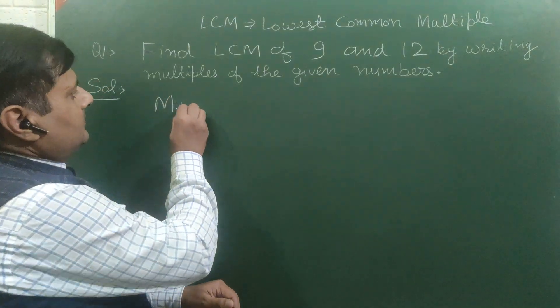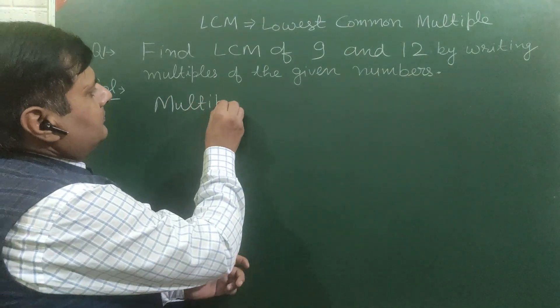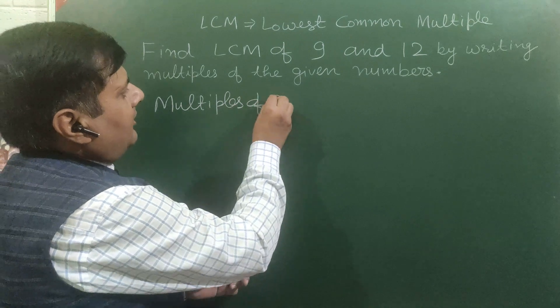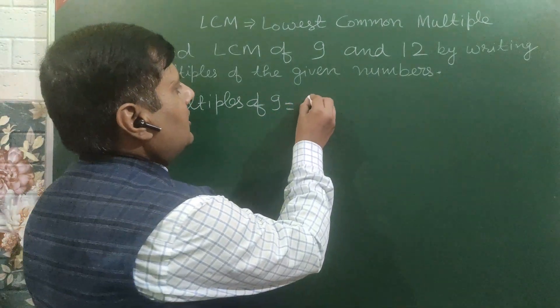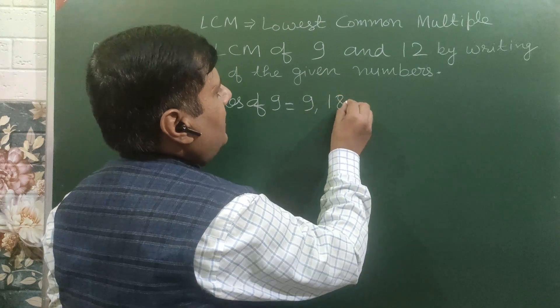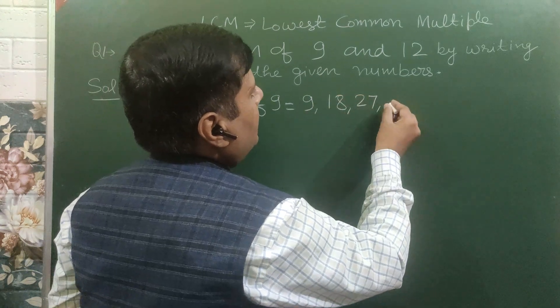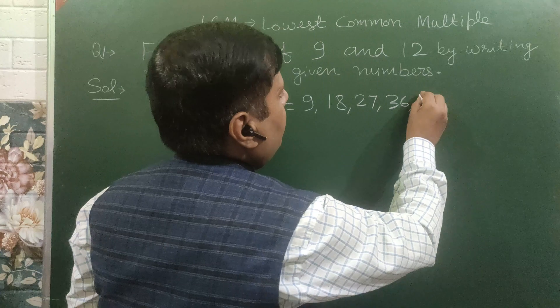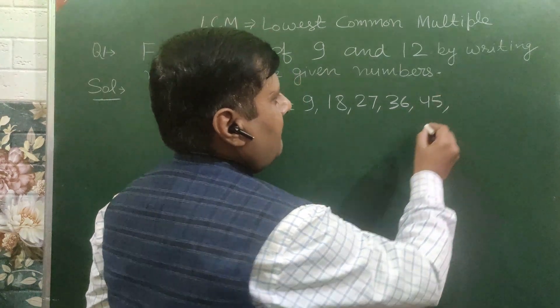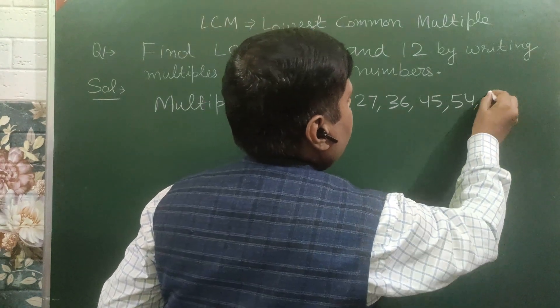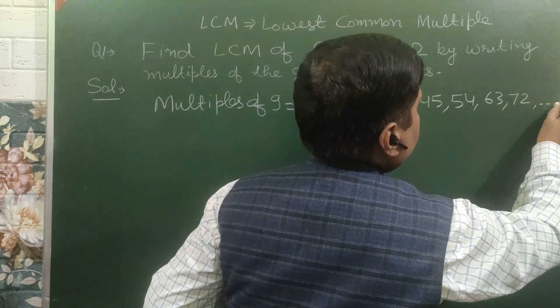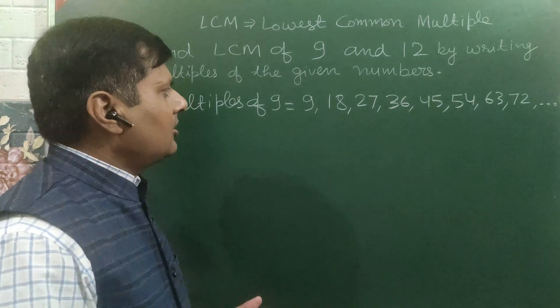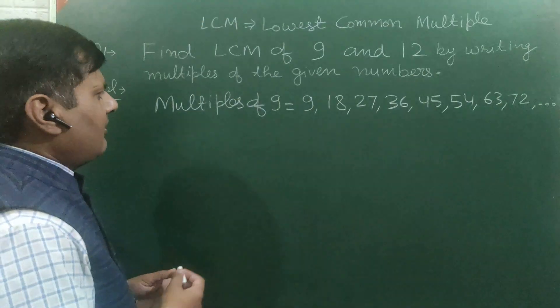We will write multiples of 9. Just see, we will write the table of 9: 9 ones are 9, 9 twos are 18, 9 threes are 27, 9 fours are 36, 9 fives are 45, 9 sixes are 54, 9 sevens are 63, 9 eights are 72 and so on. We can write many more, but it is enough.